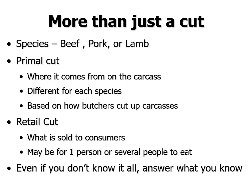When doing this in a contest, you get points for each thing you identify — a point for species, a point for primal, and a point for the retail cut. Depending on the contest, it may be three, two, or one point, but regardless you get credit for knowing some of it. So even if you don't know the retail cut, if you know the species or the primal, go ahead and answer — don't leave things blank.